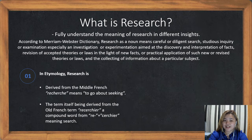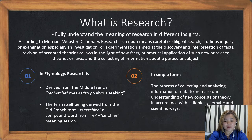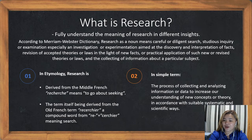In etymology, research is derived from the Middle French word 'Recherche,' meaning to go about searching or seeking. The term itself is derived from the Old French term 'Rechercier,' a compound word from 'Re' plus 'Cercier,' meaning search. In simple terms, research is the process of collecting and analyzing information or data to increase our understanding of a new concept or theory in accordance with suitable, systematic, and scientific ways.